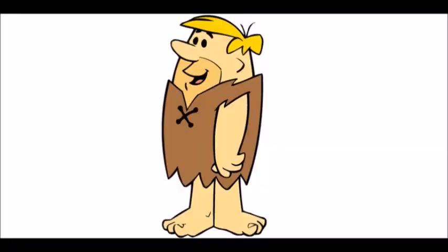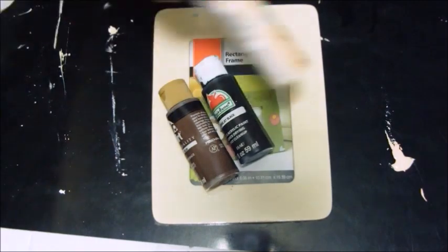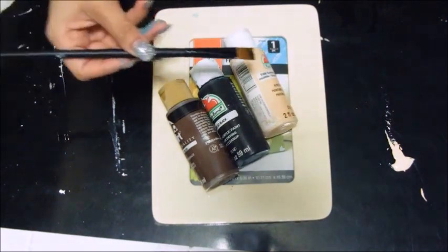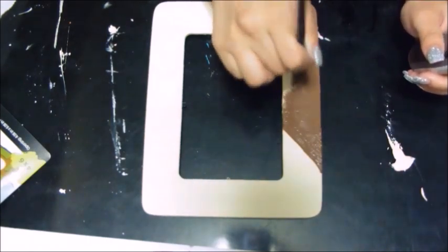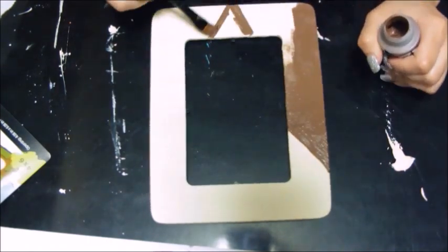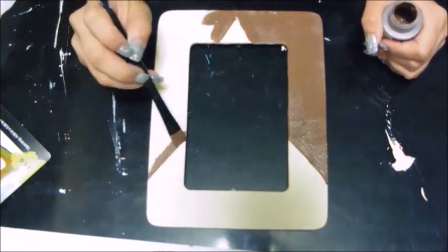So now we're doing Barney and we need a frame, brown paint, black paint, and green paint. I don't even know the color, I'm just saying green. And a brush. So now we're doing a shirt, you just cover the whole thing brown. I guess I learned my lesson after I did Fred's because more likely I would have done the same thing.